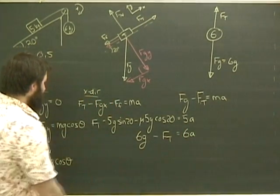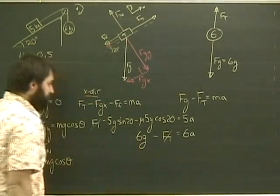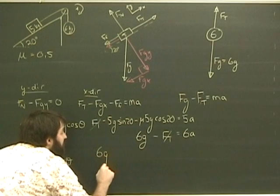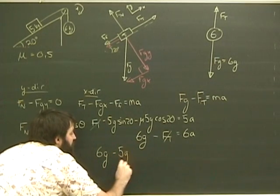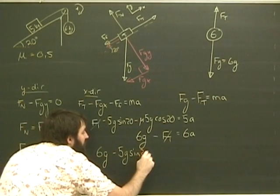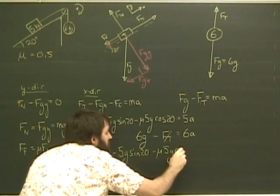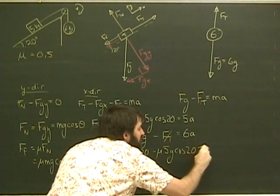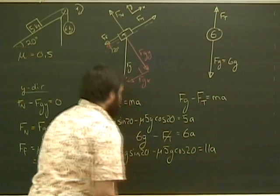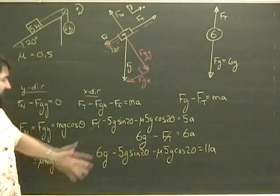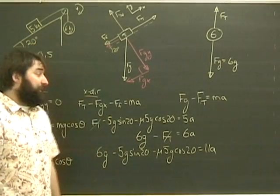When I add these, my tensions will disappear. And I'll end up with a cumbersome expression of 6g minus 5g sin 20 minus mu 5g cos 20 equals 11A. It looks big, it looks kind of awful, but we know g, we know mu, we've got the angles, we've got the masses, it's just an expression.